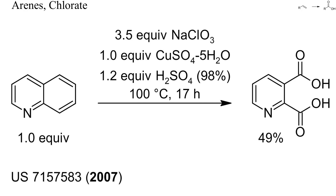The parent unsubstituted quinoline can apparently not be oxidized to pyridine-2,3-dicarboxylic acid with nitric acid alone. With chlorate and copper sulfate, however, even quinoline can be oxidized to a dye acid, as shown here. Pyridines are electron-deficient heteroarenes comparable to nitrobenzene and are usually oxidized more slowly than phenyl or benzo groups.